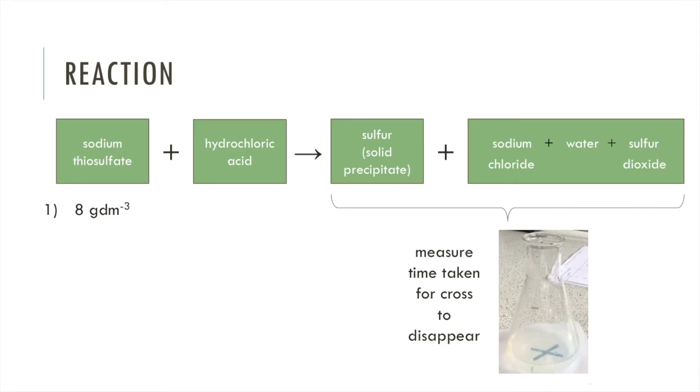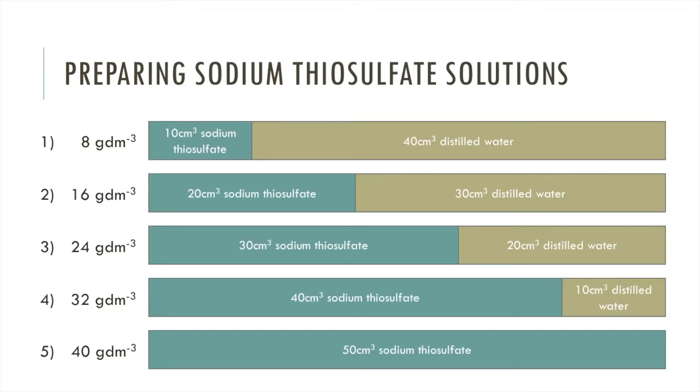We'll then repeat this reaction with a more concentrated sodium thiosulfate, and we'll keep increasing the concentration each time we repeat this reaction to see how that changes the time for the cross to disappear. The different concentration solutions are made by diluting 40 grams per decimetre cubed sodium thiosulfate with distilled water.